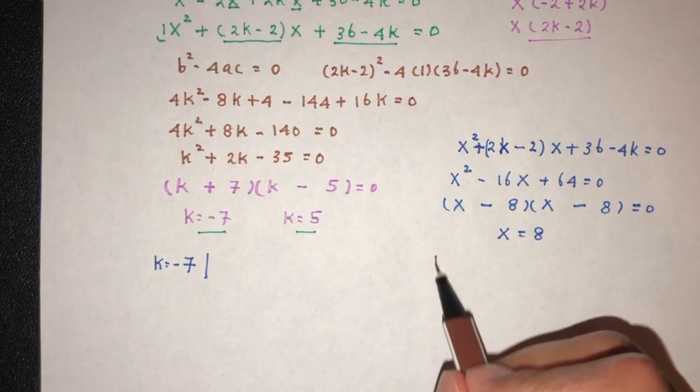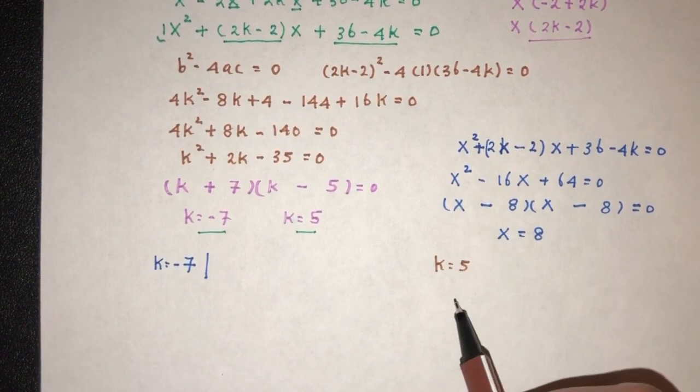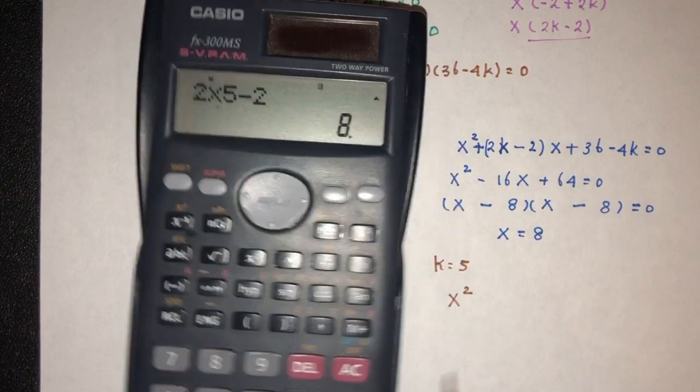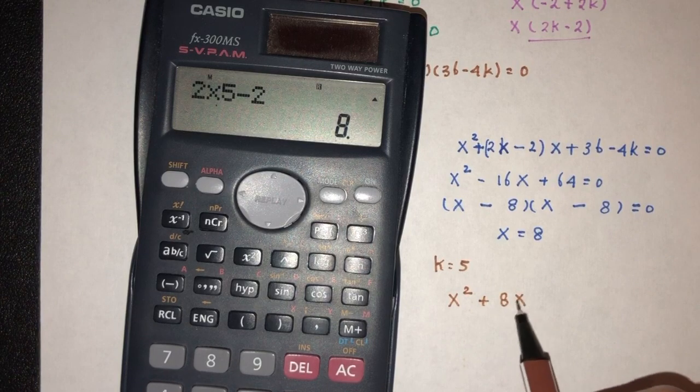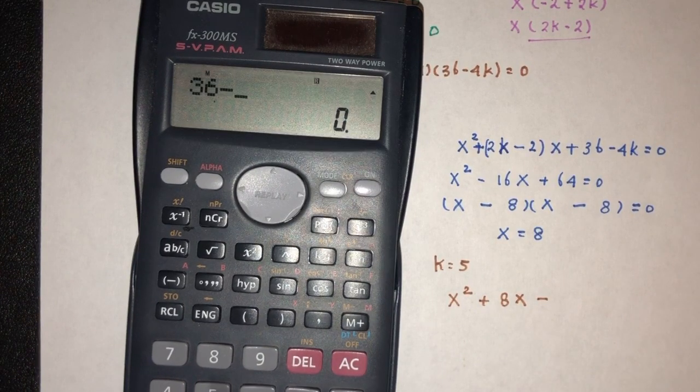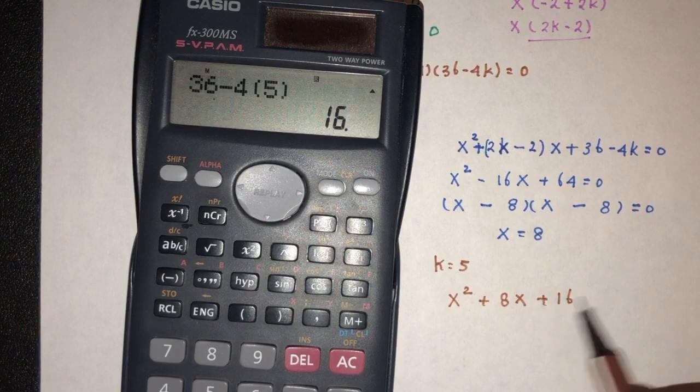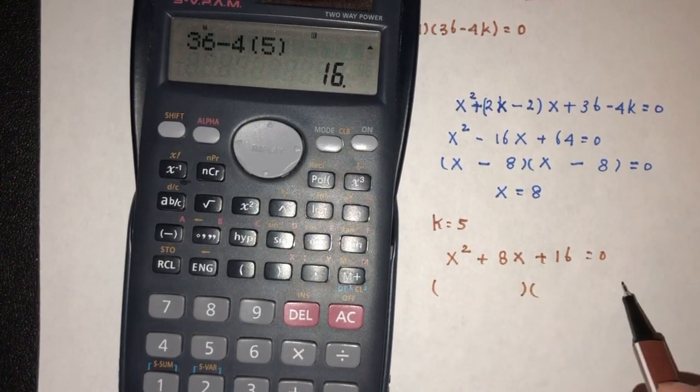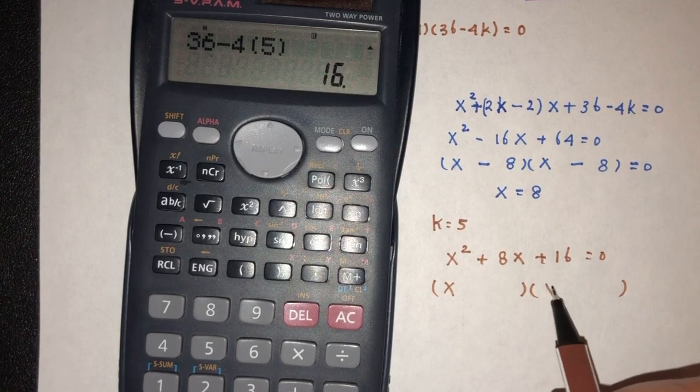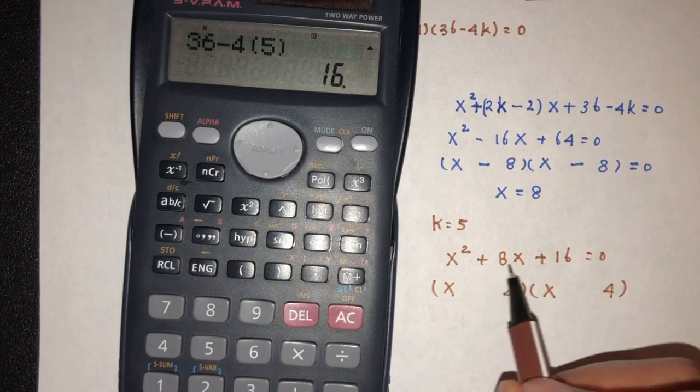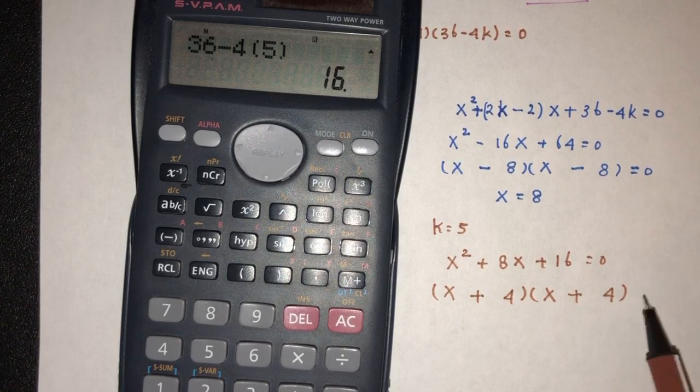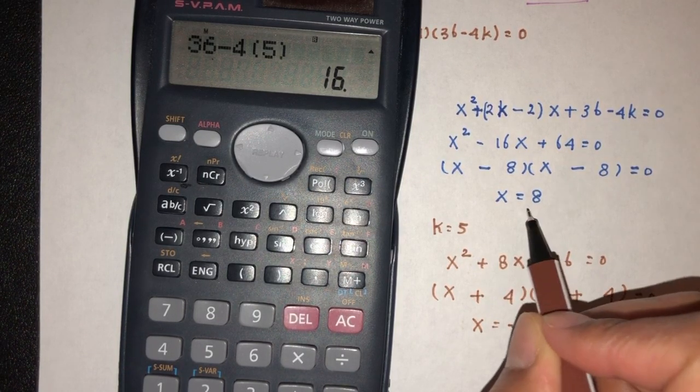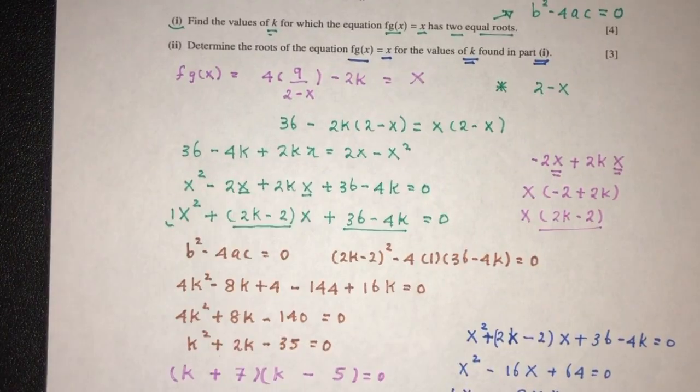Now for the other case where k is equal to 5, you will have x² plus (2 times 5 minus 2), for this one that will be plus 8x, and we have 36 minus 4 times 5, that should be 16. Now we can try to factorize. 16 will be 4 times 4. We need plus 8, that will be plus 4 plus 4. So x will be the value of minus 4. So these are the solutions to that equation for each value of k.